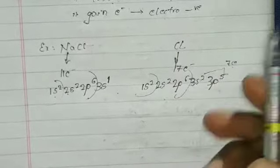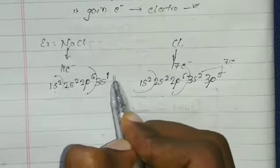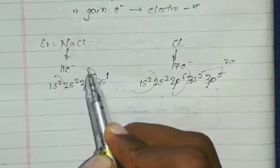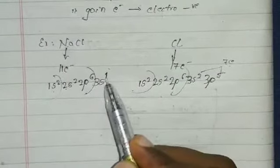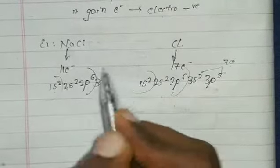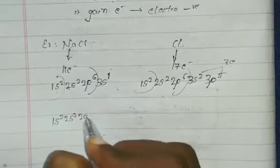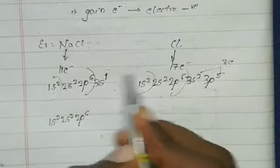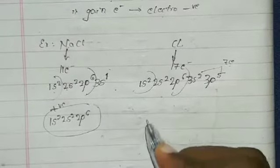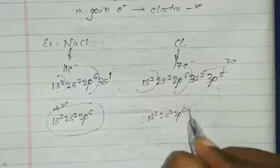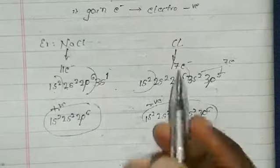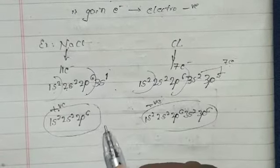Since chlorine has 7 electrons in its outermost shell, if it gets one more electron it becomes 8 — the octet structure — and becomes stable. So chlorine asks sodium to give it one electron. Sodium also doesn't want that one electron because it will then have the stable 2s², 2p⁶ configuration. So sodium gives its one electron to chlorine, leaving 1s², 2s², 2p⁶, becoming positively charged. Chlorine gains that electron and its configuration becomes 1s², 2s², 2p⁶, 3s², 3p⁶, so it becomes negatively charged.